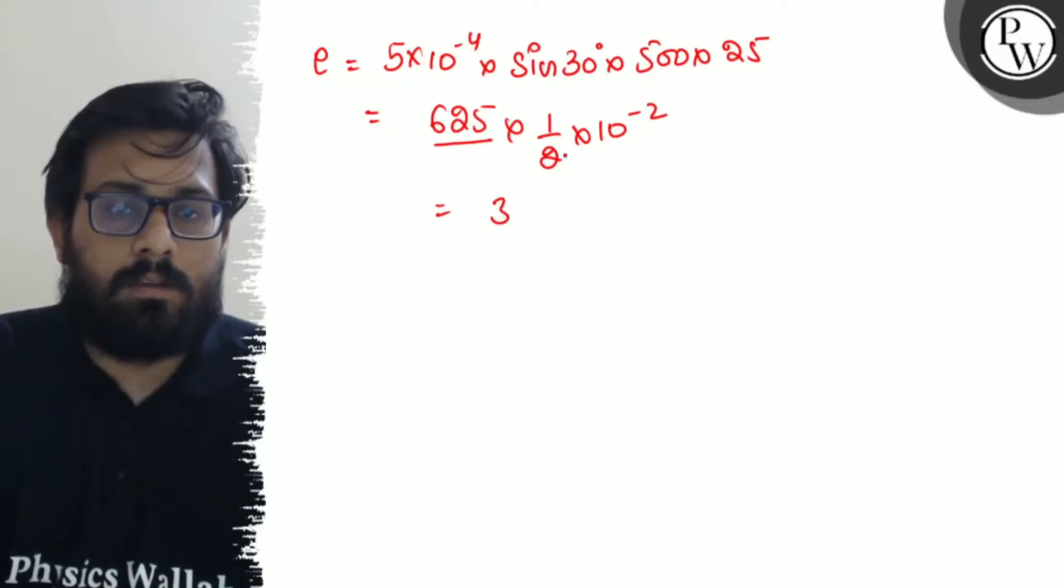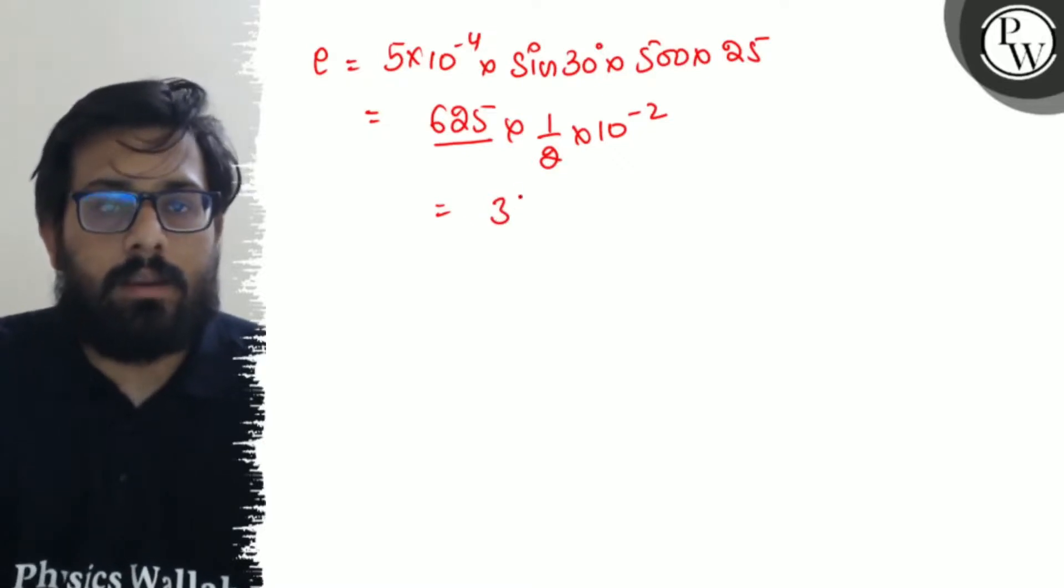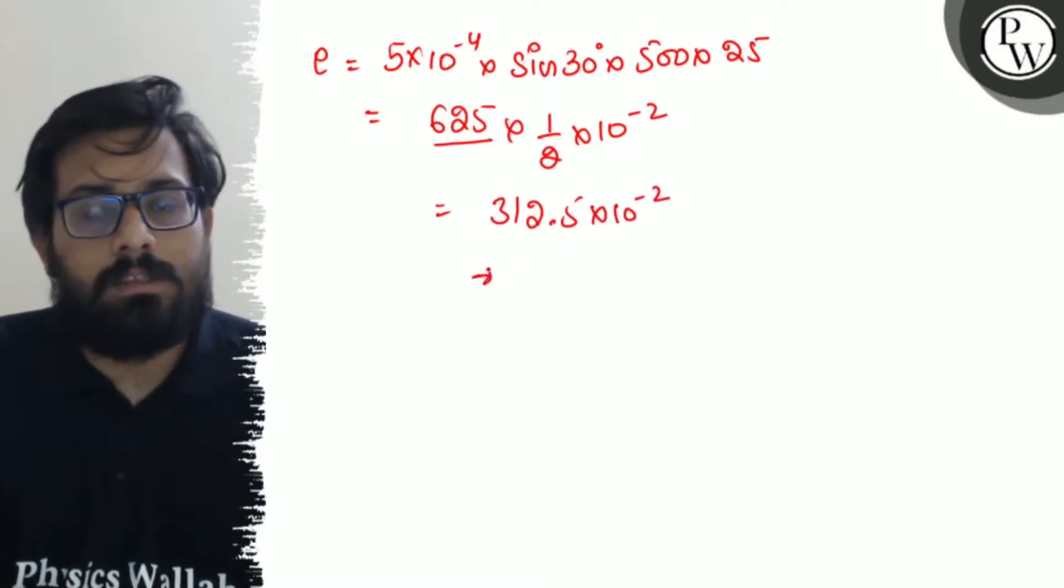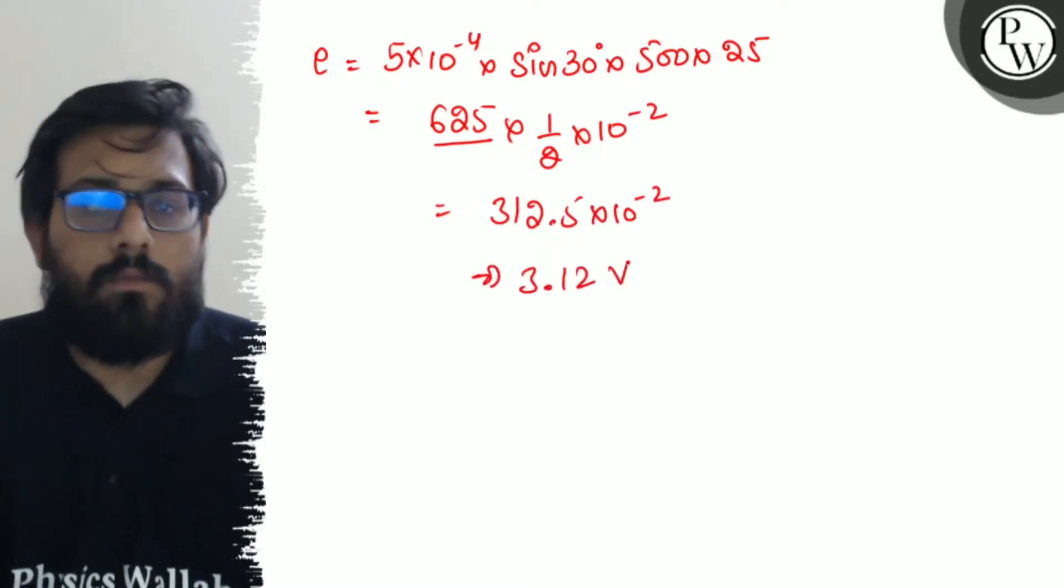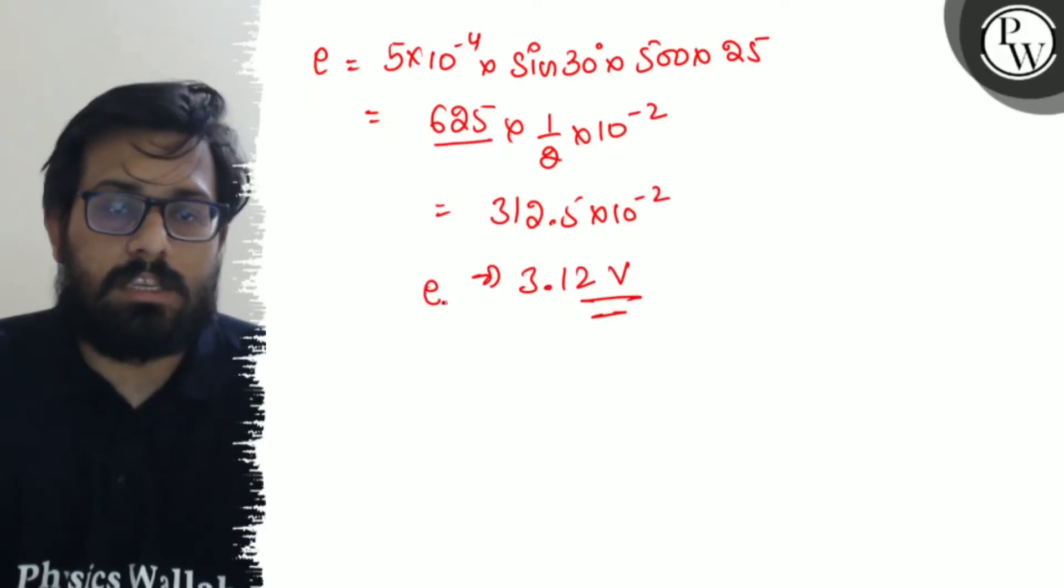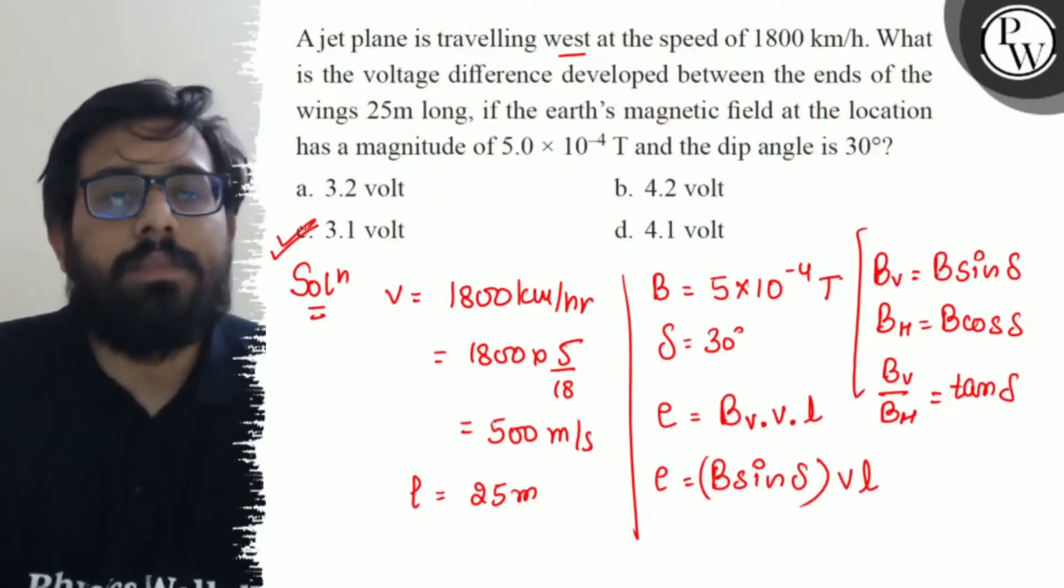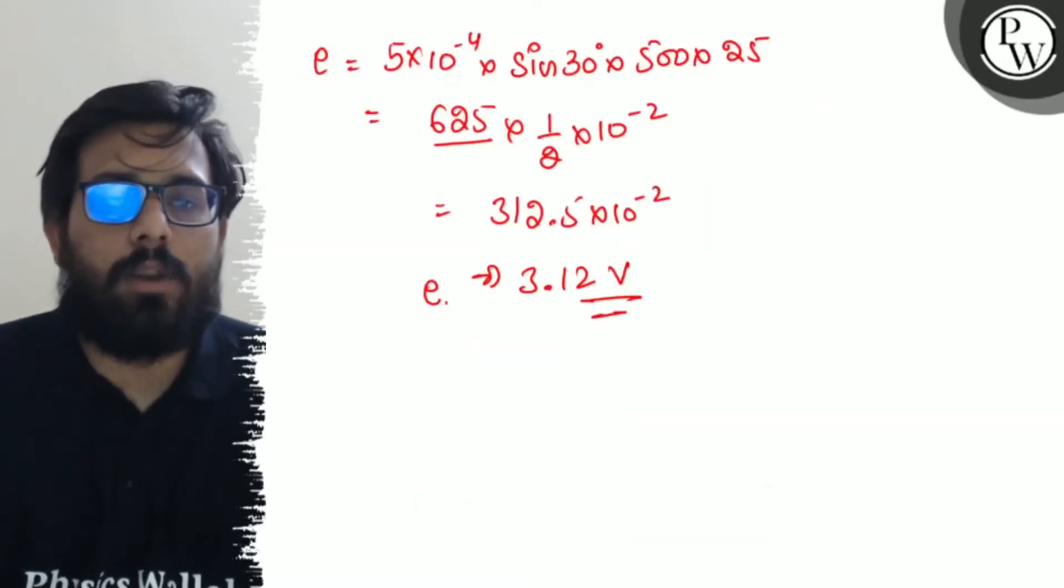Simplifying it further, so 3.12 volt which is in our option number C. So option C you could say about 3.1 volt.